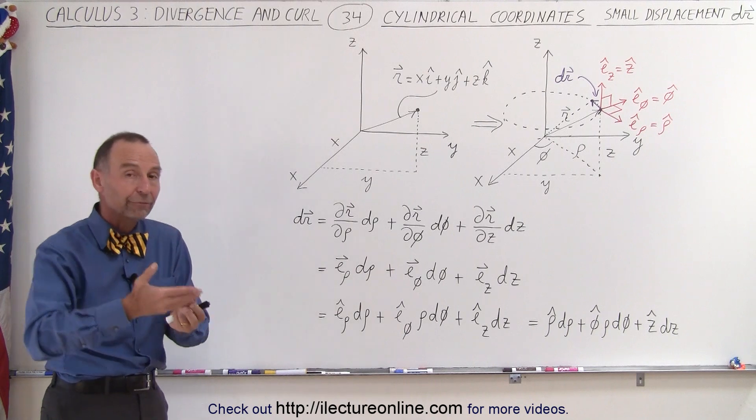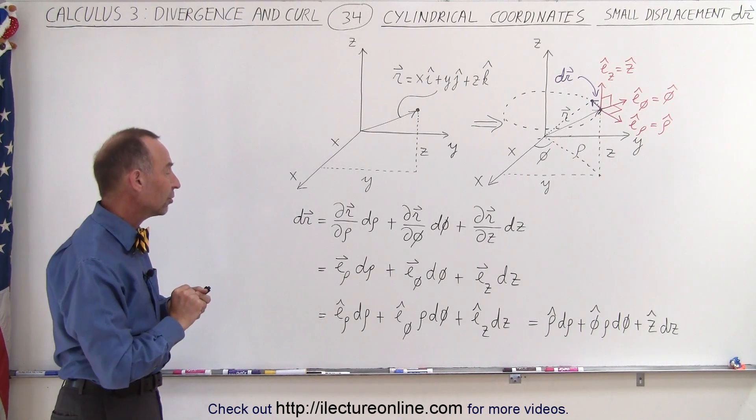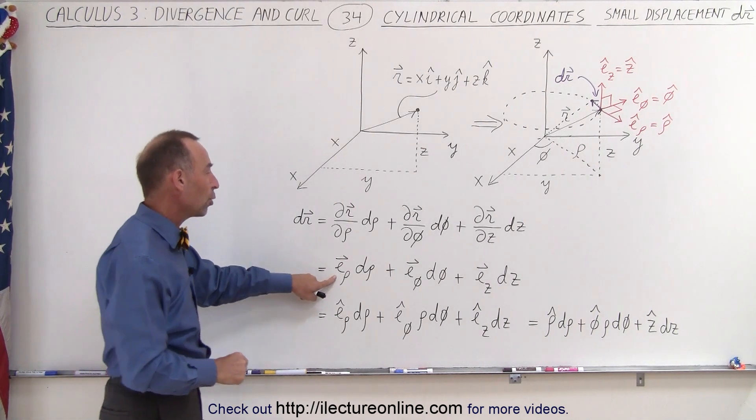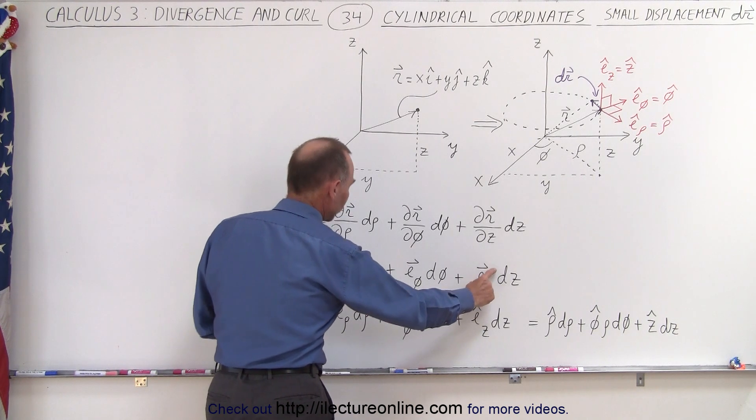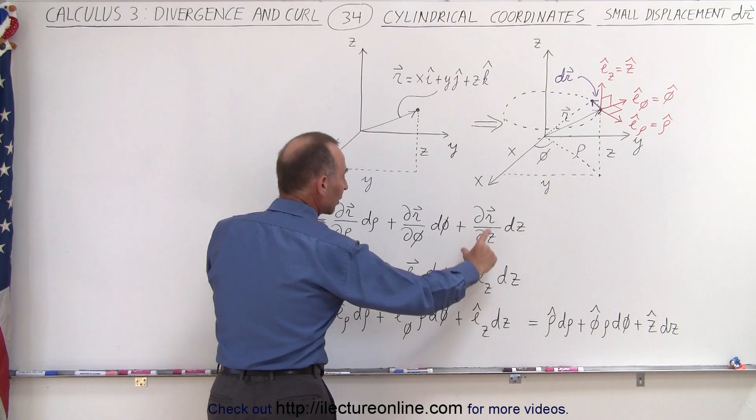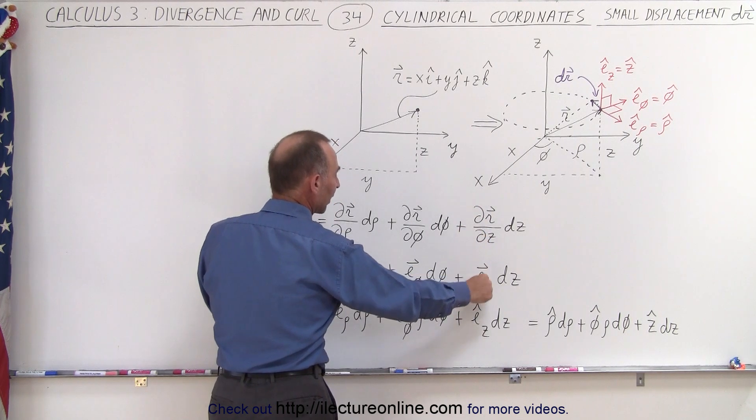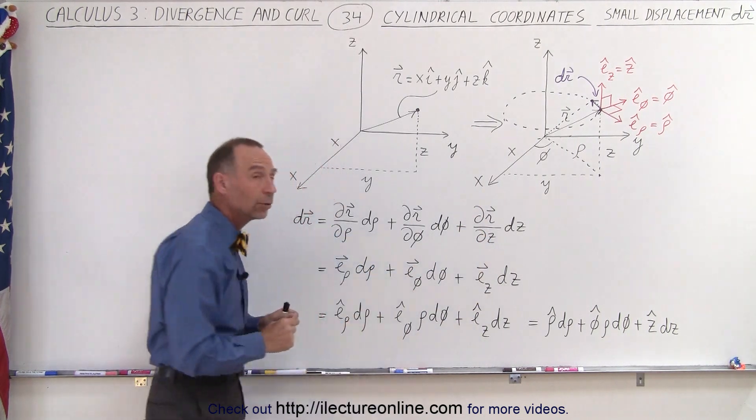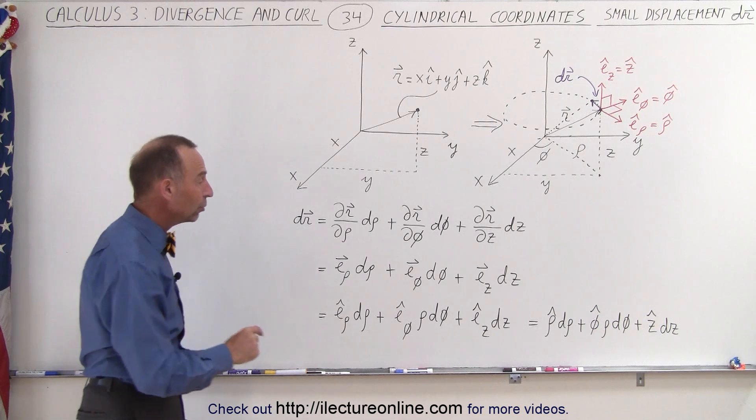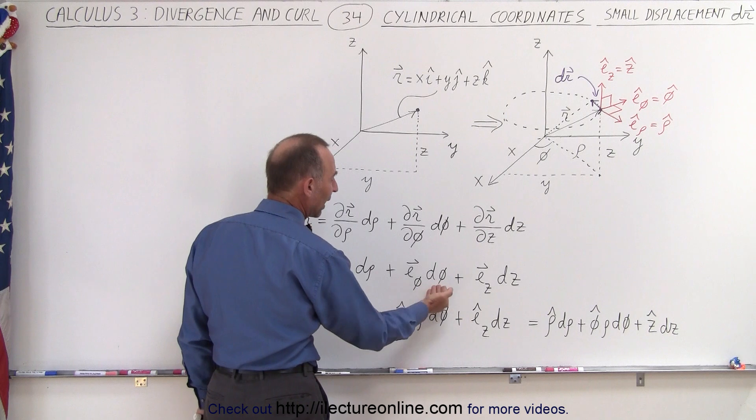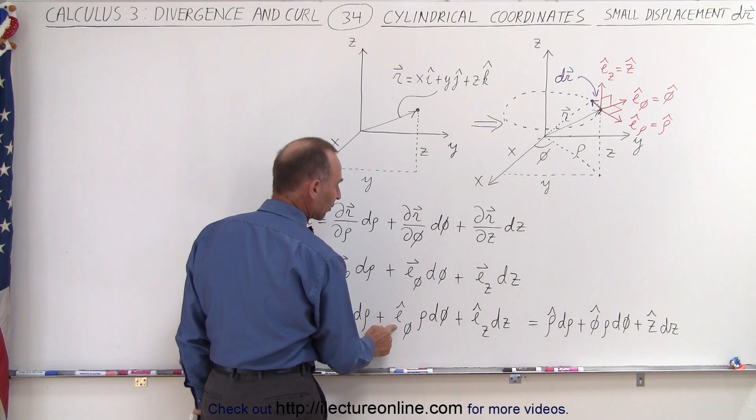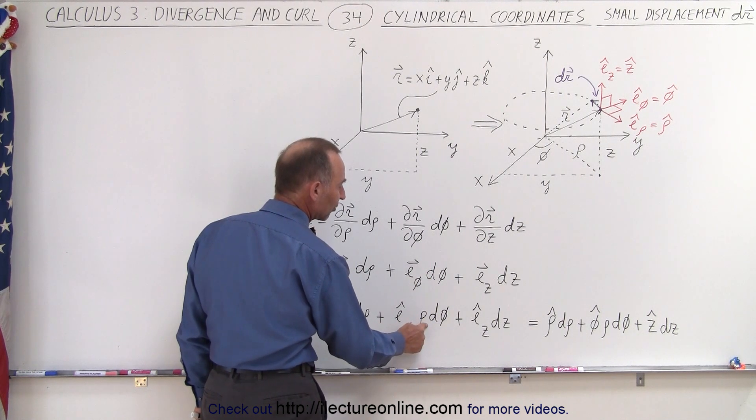But how do we then convert that to unit vectors? Well in terms of rho and z that's the exact same amount because we know that the magnitude of these two vectors when we take the partial derivative of the position vector, the magnitude of those two will be equal to one, but the magnitude of this vector was rho times this.